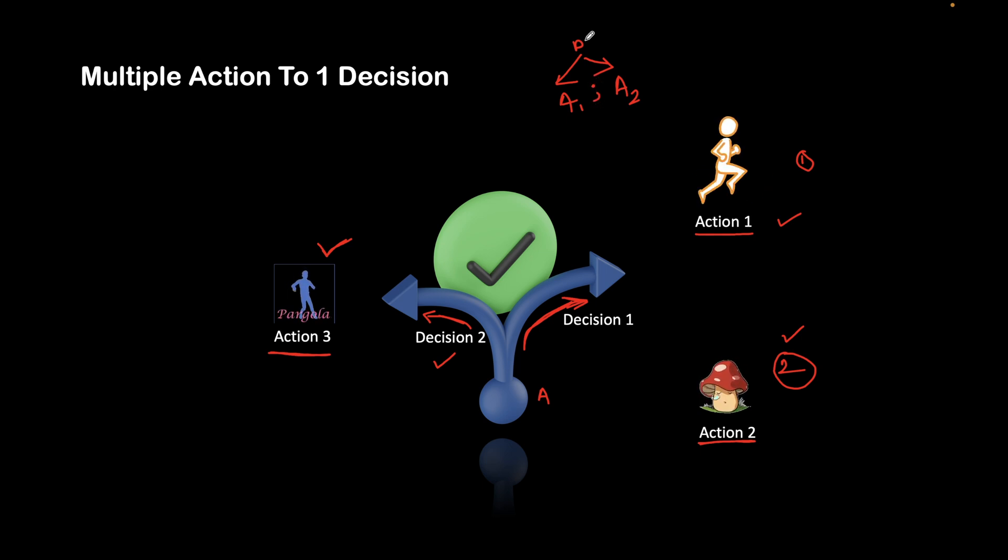If you are taking decision one, you can link it to two actions like A1 and A2, separated with a semicolon. The actions will be performed based on the sequence that they are represented in the decision column.